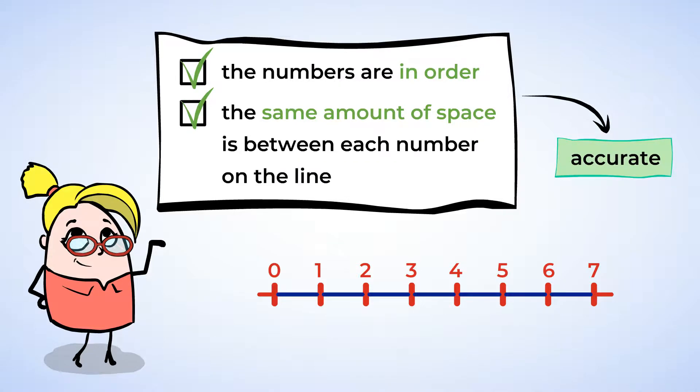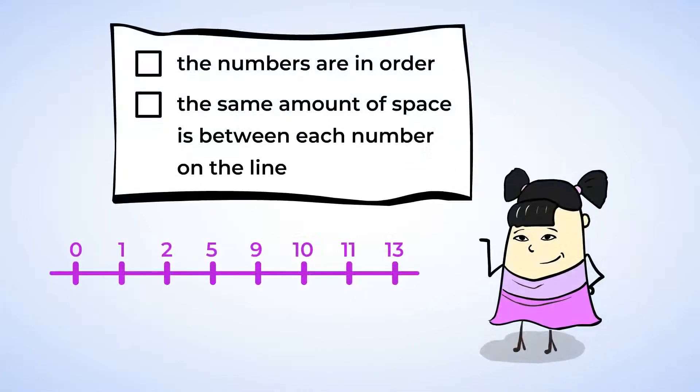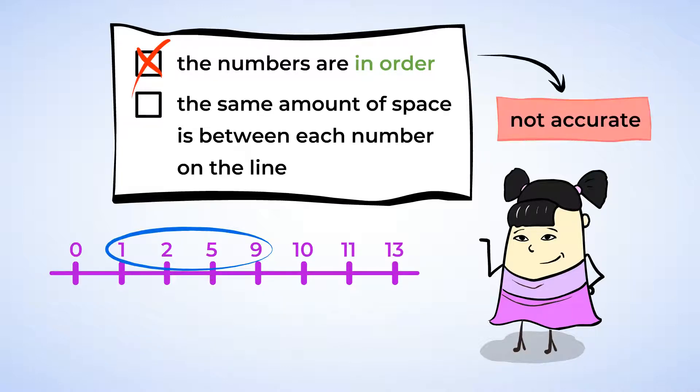Now let's look at the purple number line. First we're going to check if the numbers are in order. It doesn't look that way: 1, 2, 5, 9. Well that's not counting in order or skip counting. So this is not an accurate number line.